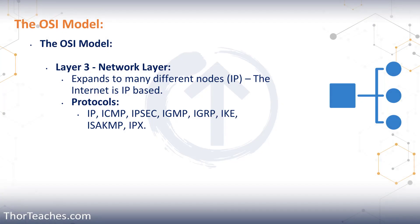Next up, we have layer 3, and that is the networking layer. Here we go beyond our local network — we go onto the internet — and layer 3 uses IP addresses. The internet is IP based, and on layer 3 we isolate our traffic into broadcast domains.